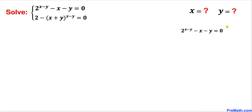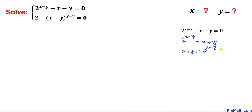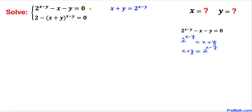Here I have copied down the first equation. Let's move the negative x and negative y to the right-hand side. So this can be written as 2^(x−y) = x + y. We can also write it by switching them around, so the equation is transformed into x + y = 2^(x−y).